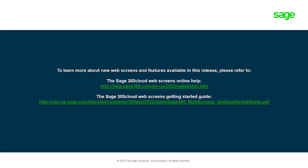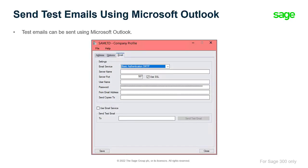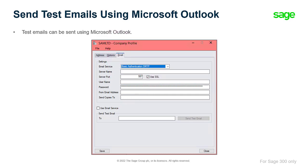More information on web screens can be found on the Sage 300 Cloud Web Screens Online Help page or in the Sage 300 Cloud Web Screens Getting Started Guide. Now let's review the desktop screen improvements. When setting up your company profile, you can now send test emails using Microsoft Outlook on the Email tab of the Company Profile screen. To use this functionality, you must have Microsoft Outlook installed on the same machine that Sage 300 is installed on, and the Use Email Service option must not be selected.